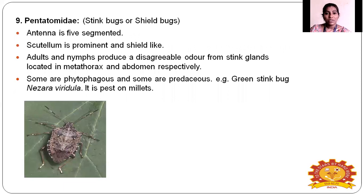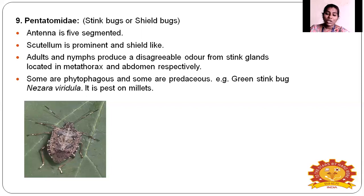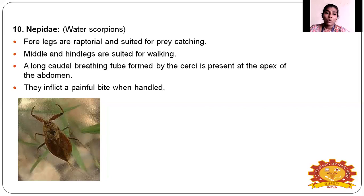Pentatomidae — the stink bug or shield bug. Antennae are five-segmented. The scutellum is prominent and shield-like. Adult and nymph produce a disagreeable odor from stink glands located in the metathorax and abdomen. Some species are phytophagous and some are predacious. Example: green stink bug, Nezara viridula, present on millets.